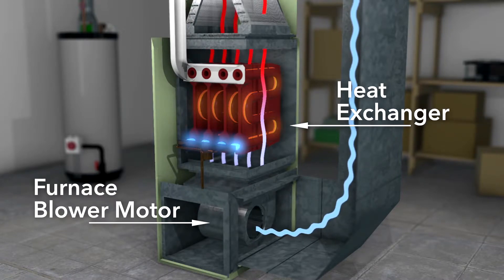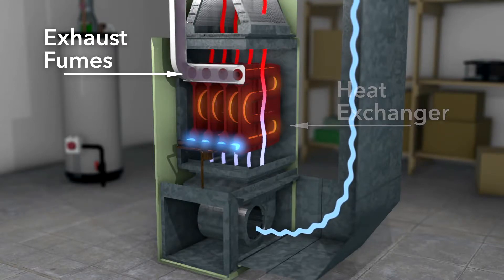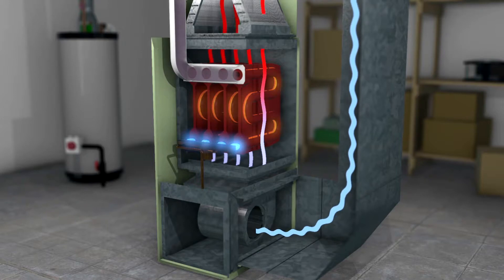The heated air is then delivered throughout your home. Exhaust fumes that include deadly carbon monoxide gas are produced as the fuel is burned. A properly functioning system is designed to keep the fumes inside the heat exchanger and then send them safely out of the house.